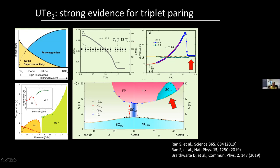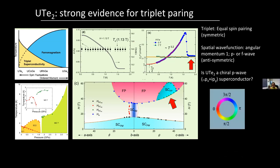One interesting unsolved mystery: if you look at the specific heat, it has a large residual value at very low temperatures below T_c. However, the thermal conductivity doesn't show the presence of free carriers. So this large residual specific heat — we still don't know what it comes from.